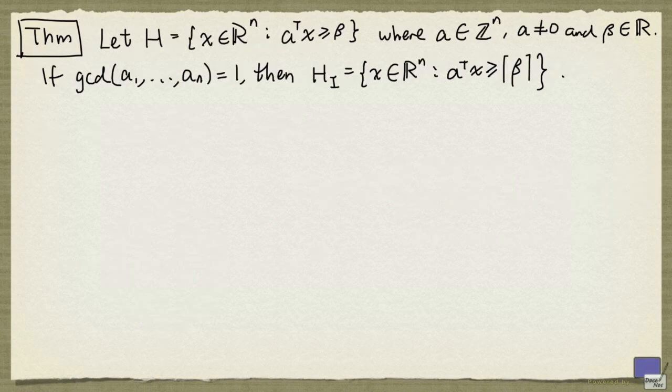We're going to look at the following result. Suppose that we have a half space H given by this. So H is the set of x satisfying the inequality a^T x ≥ β. Here, a is an n-tuple with integer entries, not identically 0, and β can be any real number.